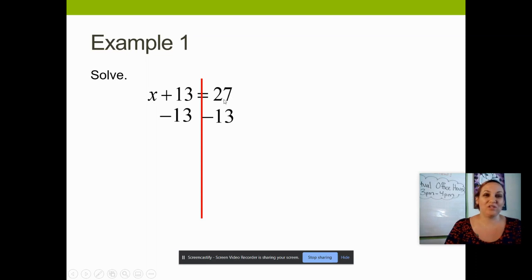On the other side of the equation, I do need to figure out what 27 minus 13 is. 27 minus 13 is 14. Now that my letter x is all by itself, I'm done with this problem. x equals 14.